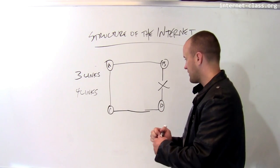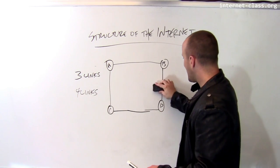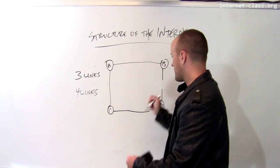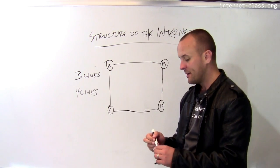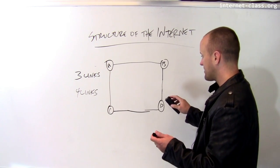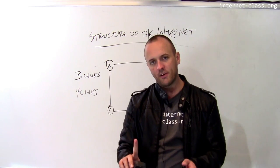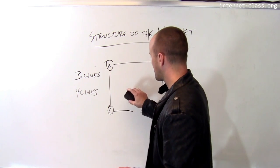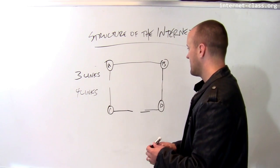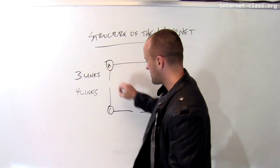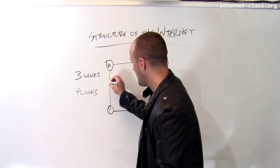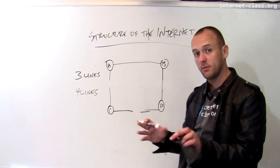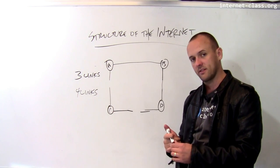This is the fundamental trade-off: I can add more links to this network, and as I do, the network gets more expensive but also more robust. However, this four-link network, although it can tolerate one link failure, cannot tolerate two link failures. If any two links go down, I'm going to partition my network. In this case, C is now all by itself. A, B, and D can still communicate with each other, but C is totally disconnected from the rest.